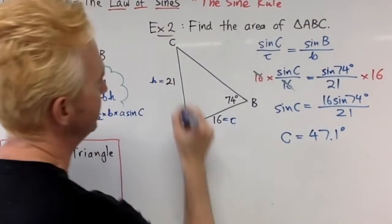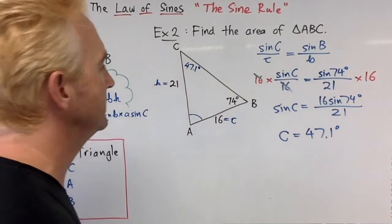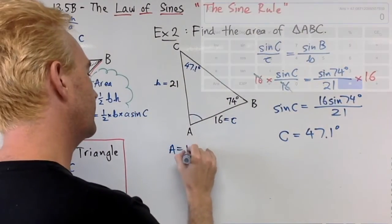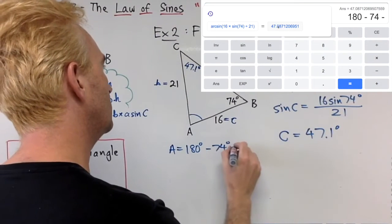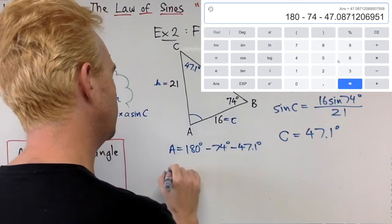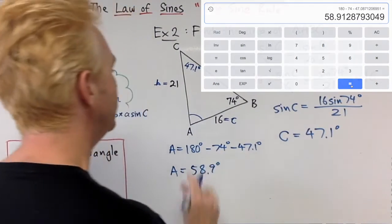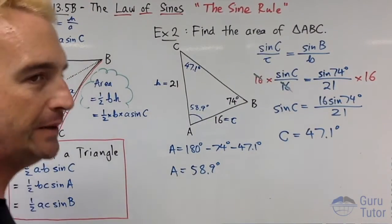We now have angle C, 47.1 degrees. We have two angles now, so angle A is just going to be 180 minus 74 minus 47.1 degrees. Angle A is 58.9 degrees.